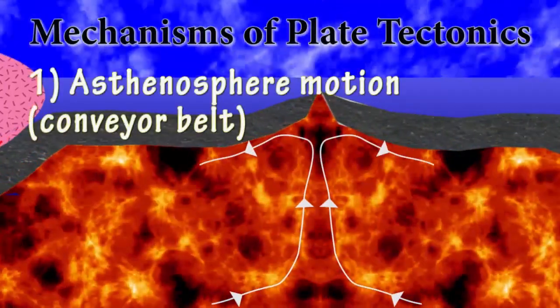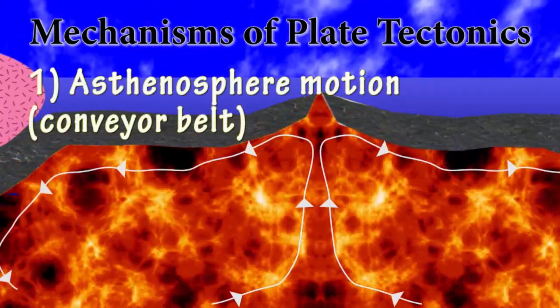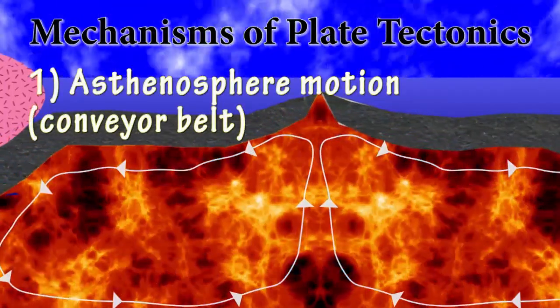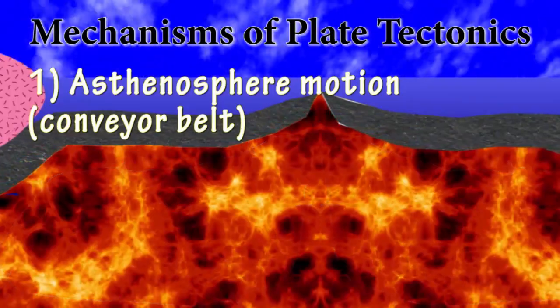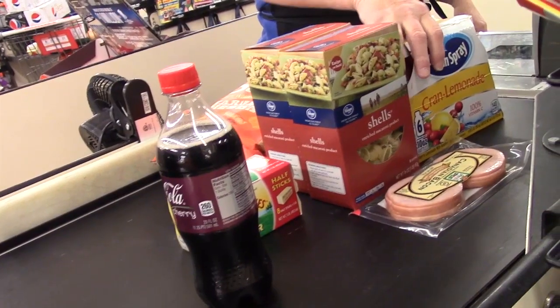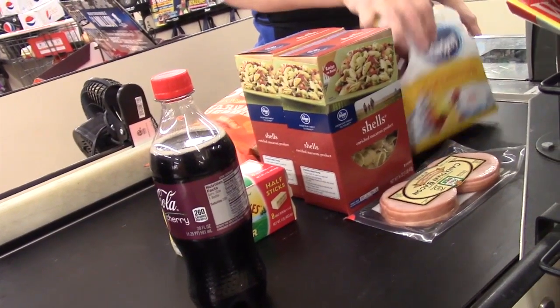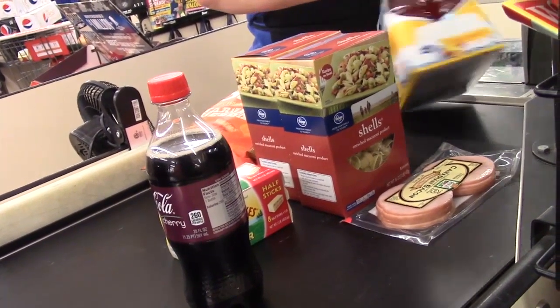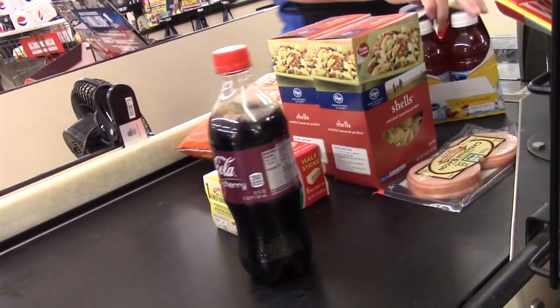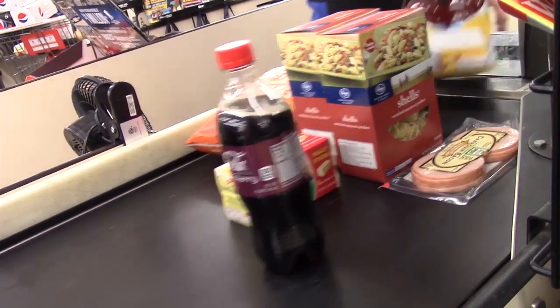We can rephrase this convection of the asthenosphere mechanism for seafloor spreading as the conveyor belt mechanism. It's like the conveyor belt at the grocery store, in which the lithospheric groceries ride atop the conveyor belt asthenosphere.